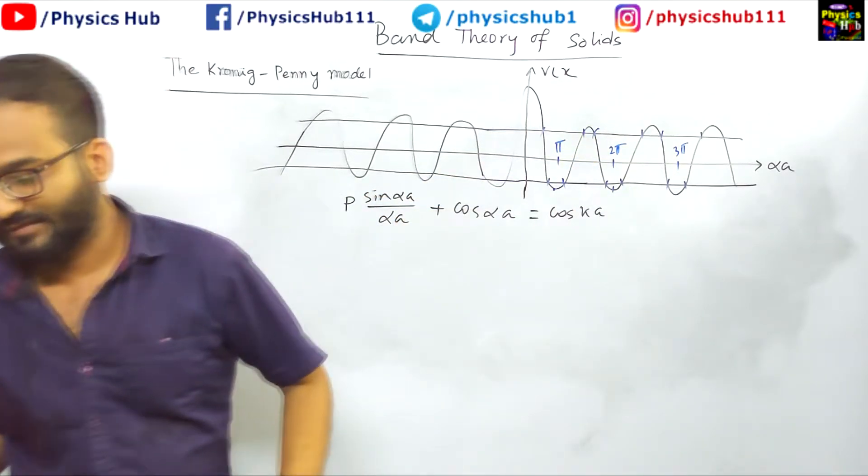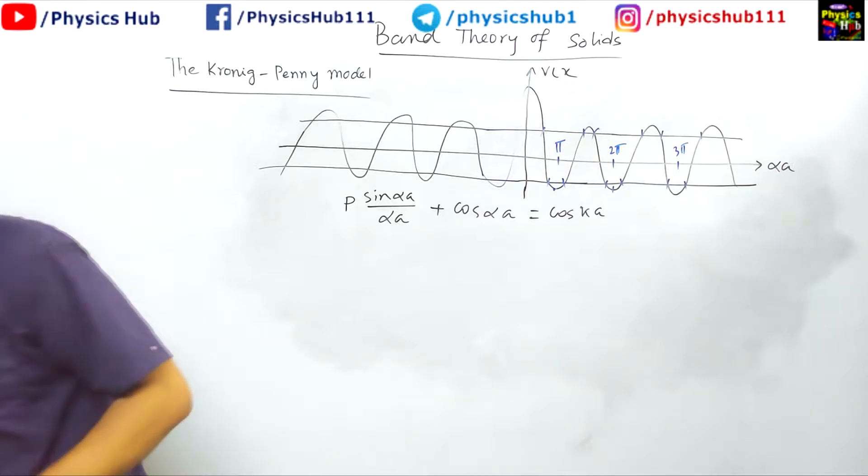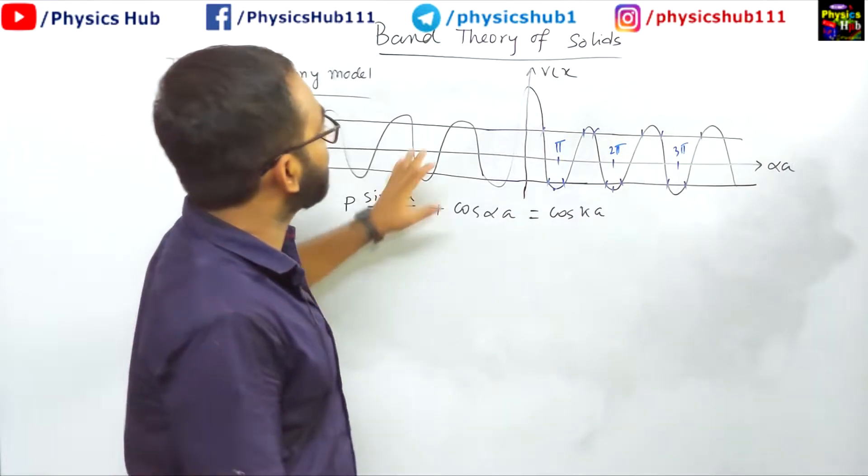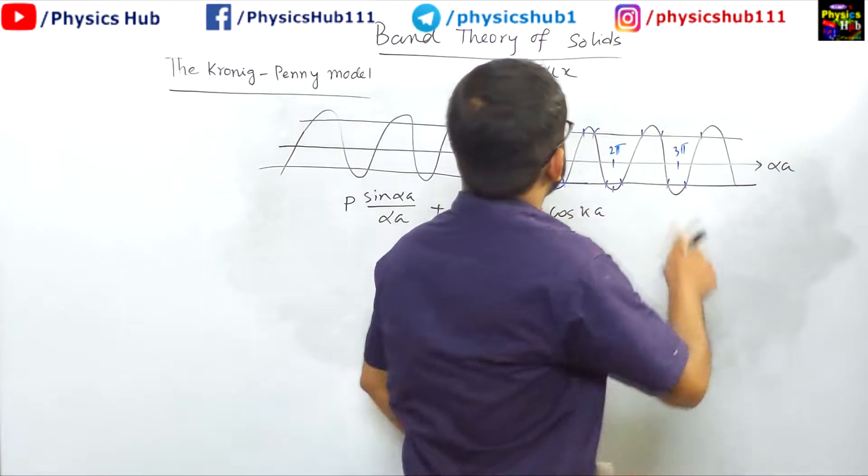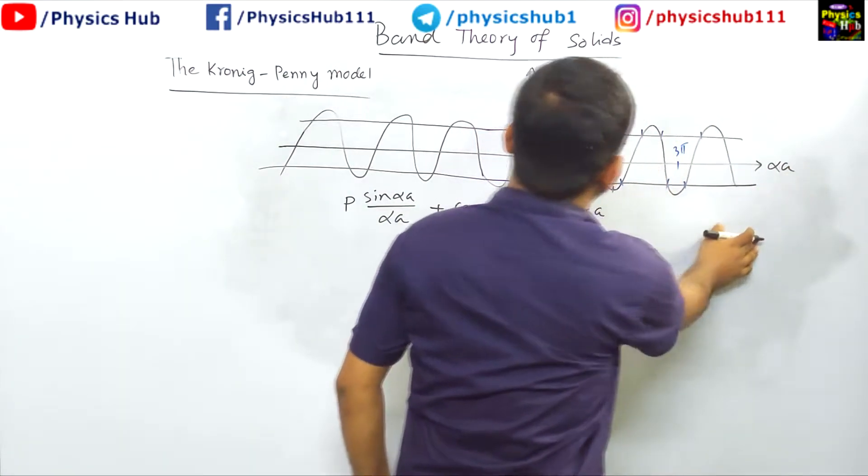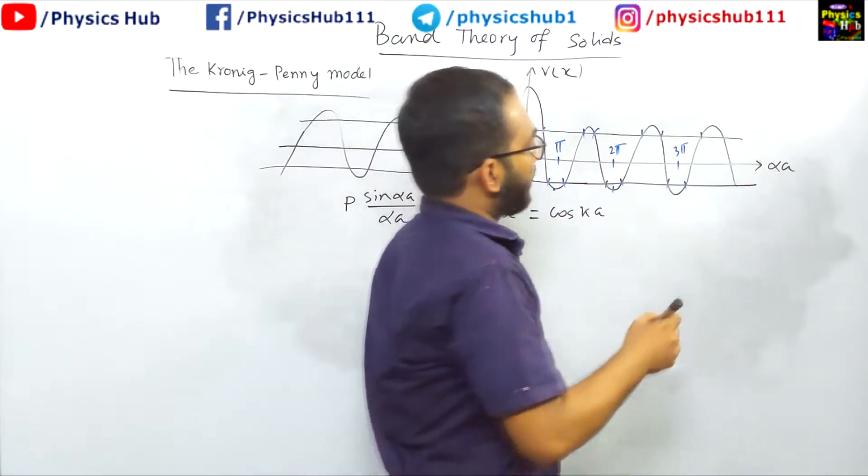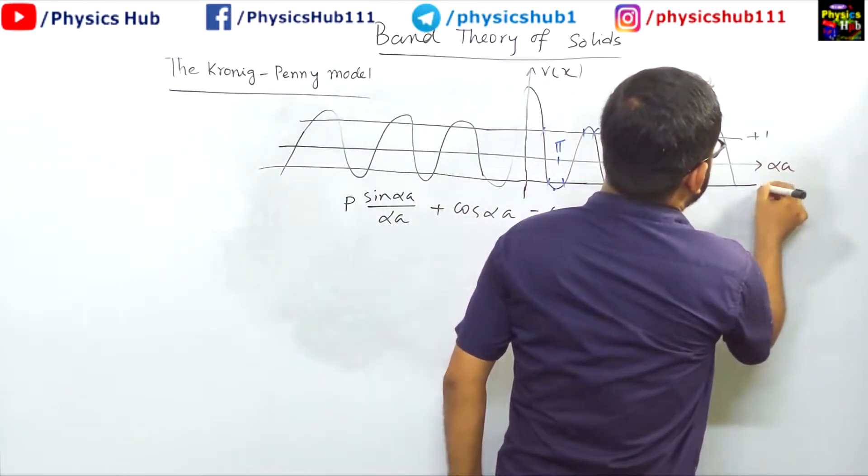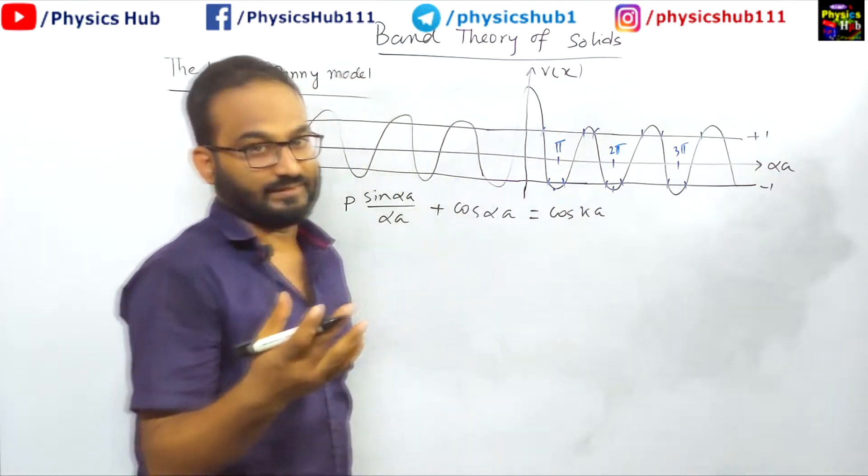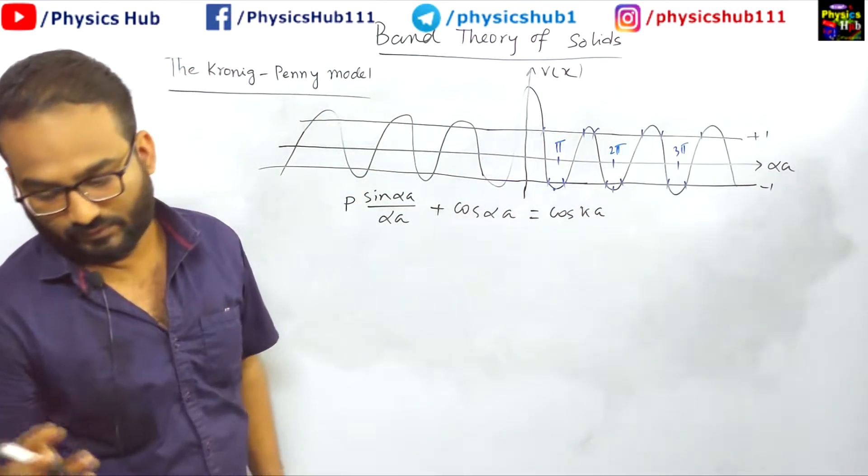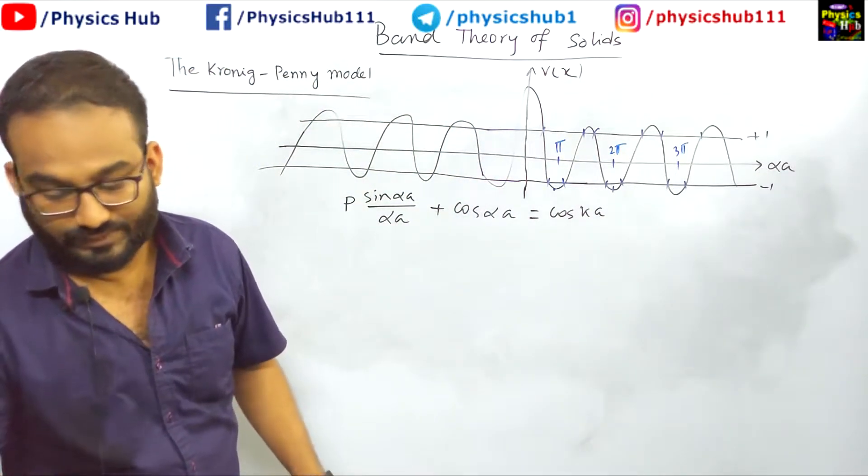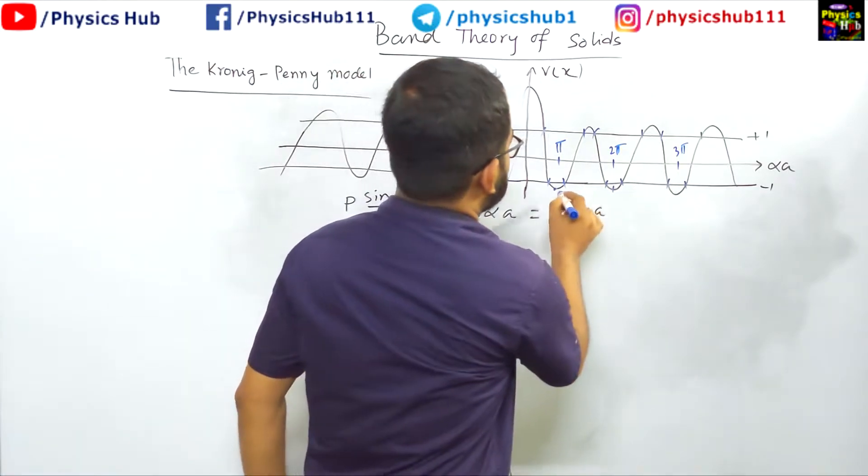I hope you understand my limitation. Anyways, so we got this kind of form of the potential V(x) versus alpha. I have just redrawn it so that you can understand it more. So these are the two extreme values of cos(ka): plus 1 and minus 1. That sets the limit - what will be the allowed energy value and what will be the forbidden energy value. And you can see this is the minimum.